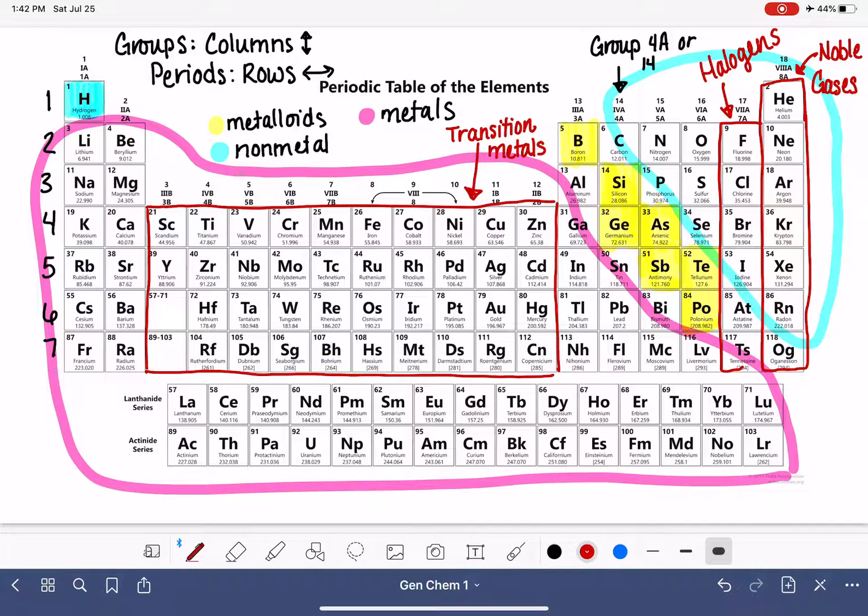And then over here, so we're continuing to move from right to left. We have a special name for the elements that are in group 2A. These elements are called the alkaline earth metals.